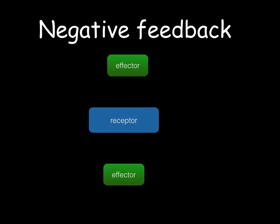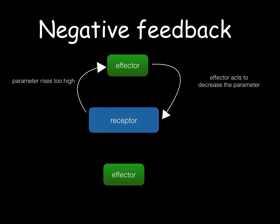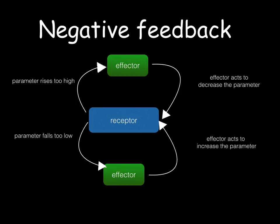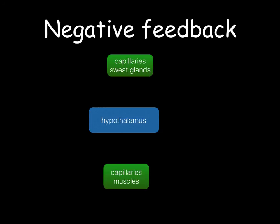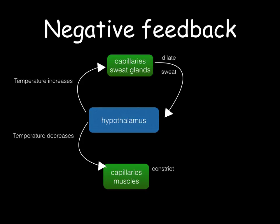What is a negative feedback loop? You've got the receptor and the effector. The receptor receives a signal — an input about the parameters — then sends a signal to the effector, which causes a change so that the parameters return back to normal. If the parameter is too high, the effector causes a change so the parameters decrease. If the parameter falls too low, the effector causes a change so the parameters increase. For example with temperature, the hypothalamus detects a change. If temperature is too high, the capillaries dilate and the sweat glands sweat, bringing the temperature back down. If temperature is too low, the capillaries constrict and the muscles shiver, increasing the temperature again.